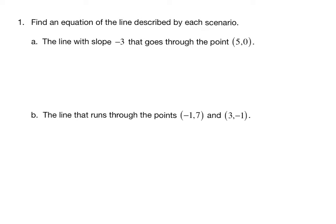1a, the line with slope -3 that goes through the point (5,0). So don't forget, every non-vertical line has an equation of the form y = mx + b. y is your output variable, m is the slope of the line, which will be a specific number, x is your input variable, and b is the y-coordinate of the y-intercept, which will also be a specific number.